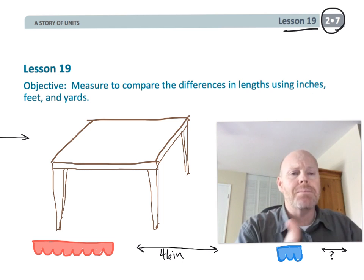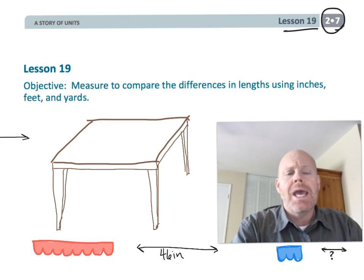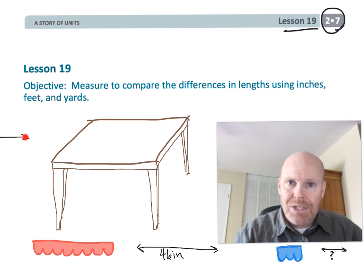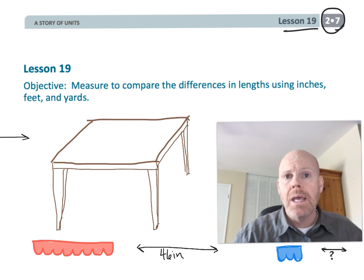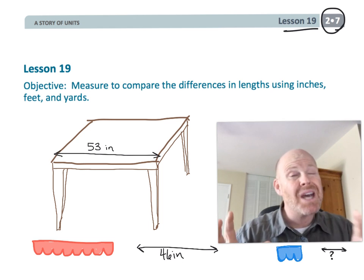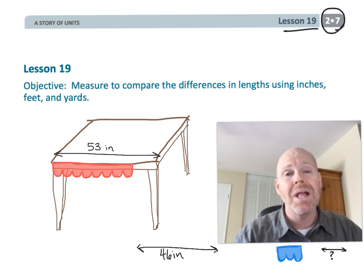For example, if I have a table and I know that the table is 53 inches wide, and I've got a piece of ribbon and that red ribbon stretches but not quite all the way across the table. That red ribbon only goes 46 inches across the table.